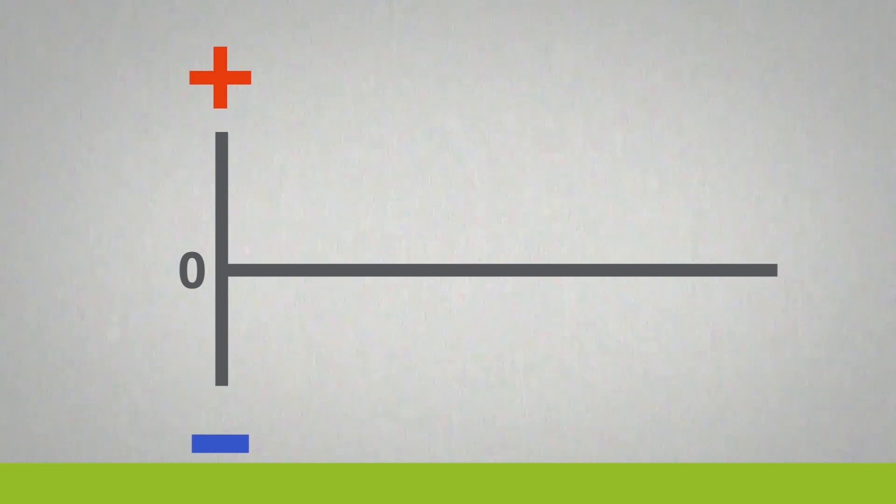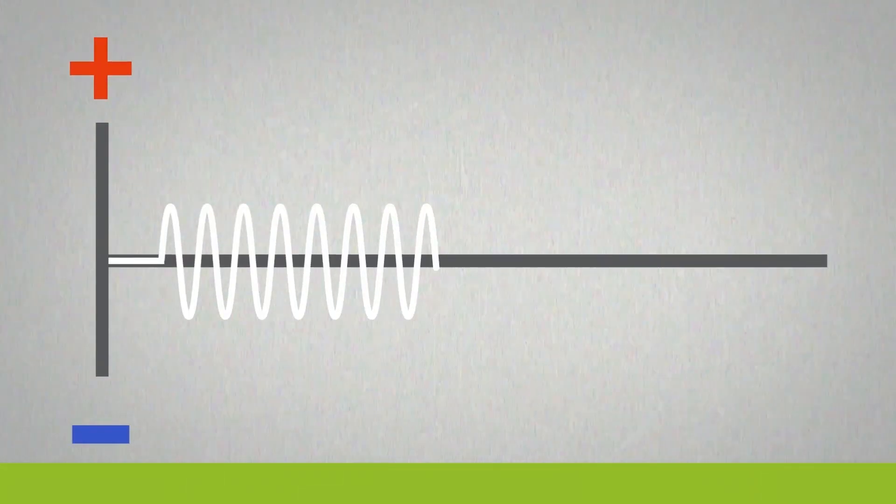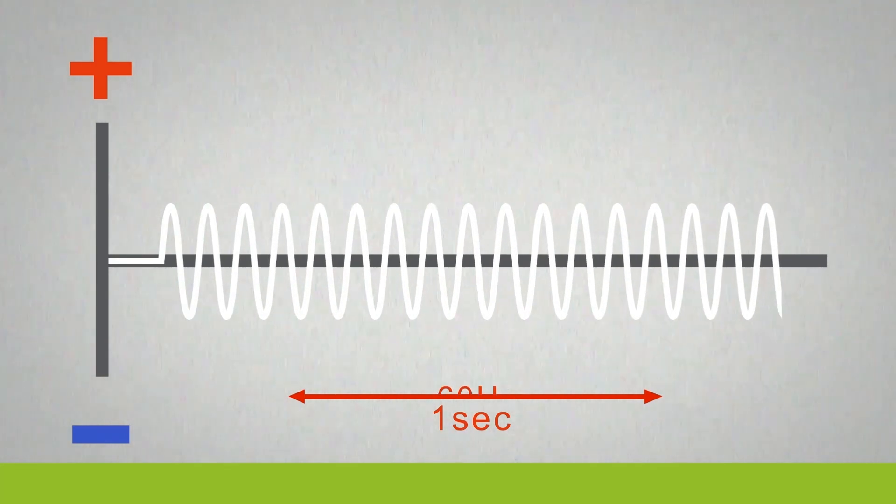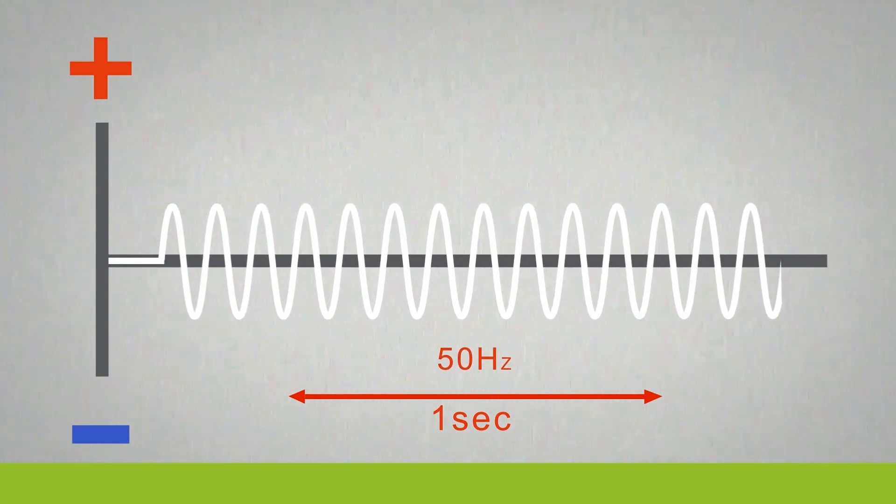One complete cycle is from zero to maximum positive, back to zero, to maximum negative and again back to zero. That's called a hertz. In North America we have 60 hertz per second and most of the rest of the world uses 50 hertz per second.